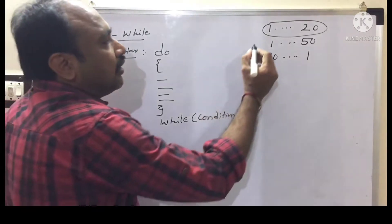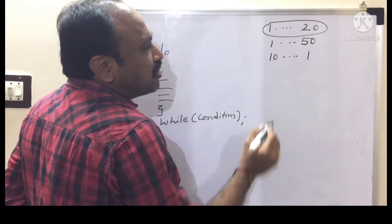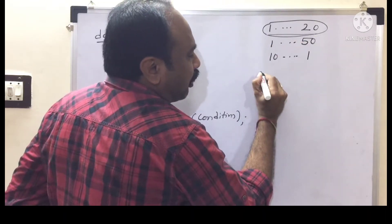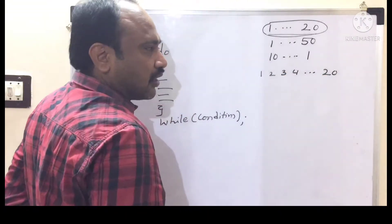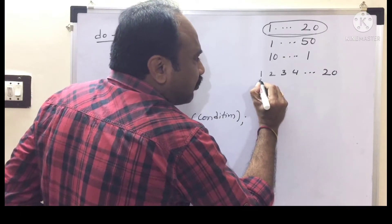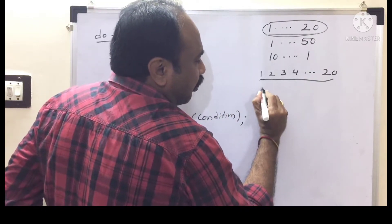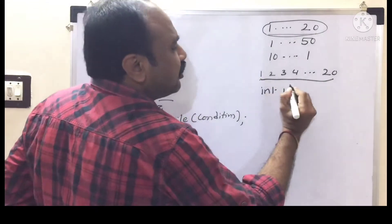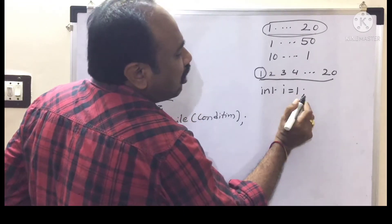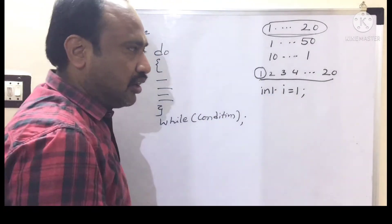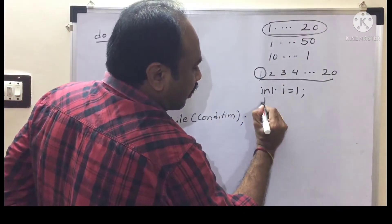When you are going to write programs like this, first check: what is the series of values we have to print? We have to print 1, 2, 3, 4 up to 20 — an integer series. So take one variable: int i, or int x, or int j — any variable. What is the first value in the series? 1. Initialize that 1 to i. This is called initialization.